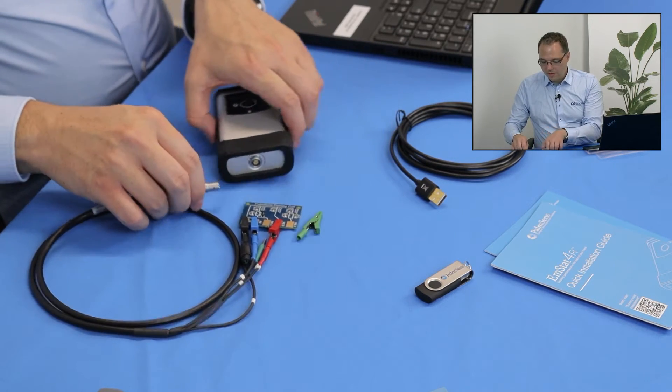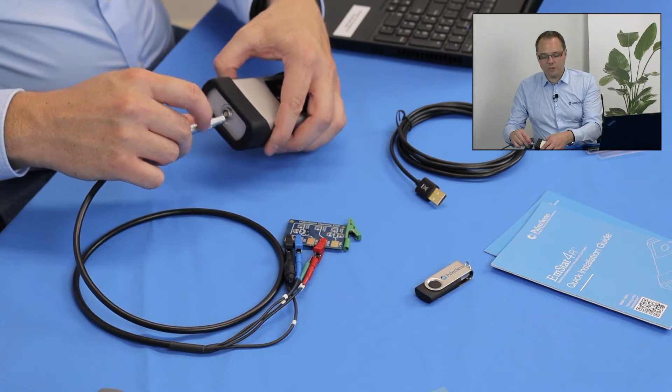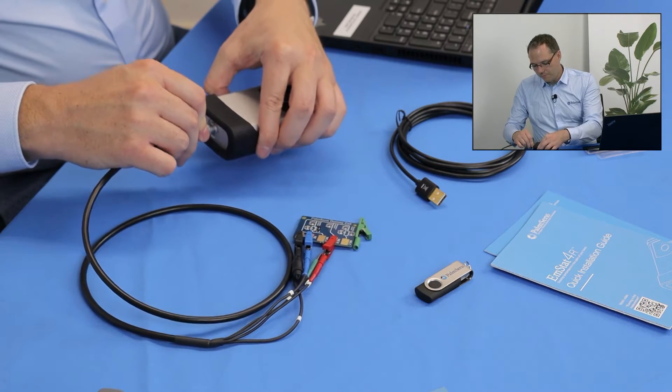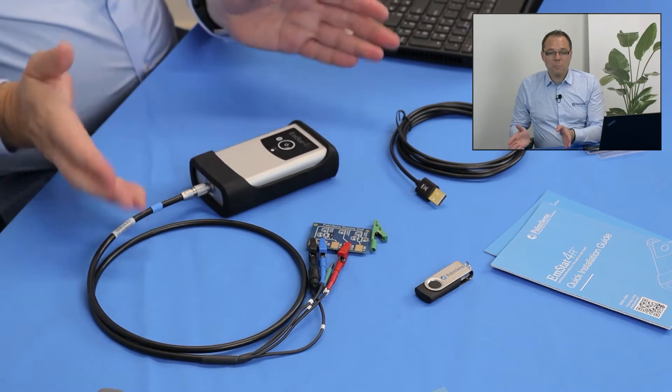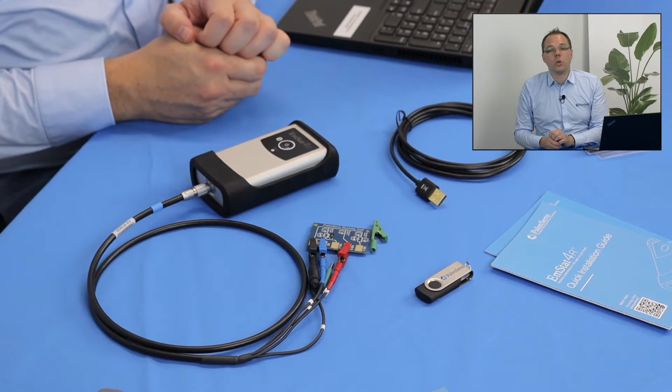Then I connect the potentiostat. Just make sure that the red dot points to the top and then you can just push it in. Before we can do a measurement, we of course need to switch the potentiostat on. For that we just press the button and the ring around it illuminates so we know it's switched on. Great, now we've set up our physical experiment. Now we need to get to the software part. So let's have a look how we set up the measurement in the software PS Trace, which I've already installed and opened on my laptop.